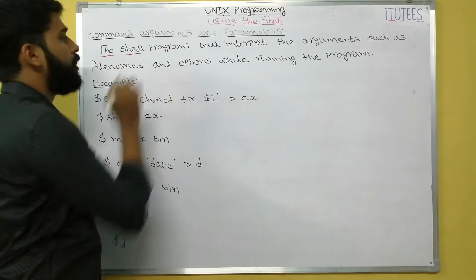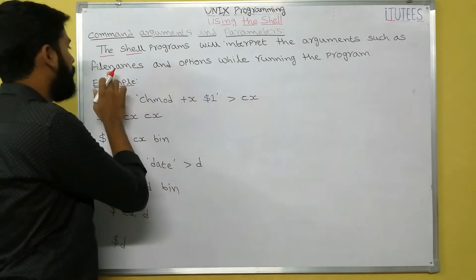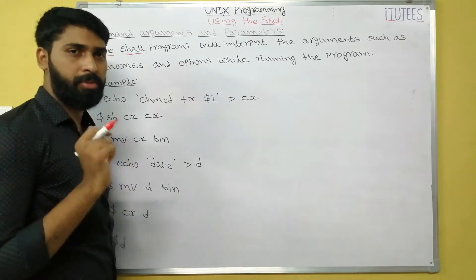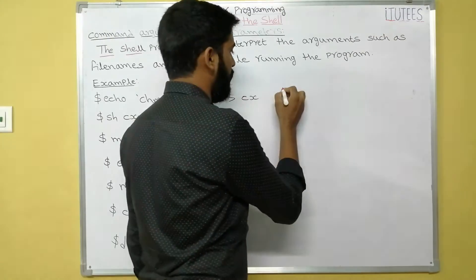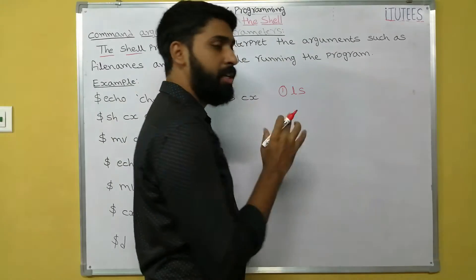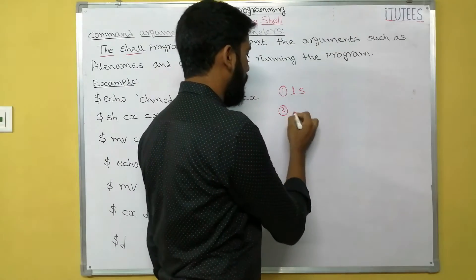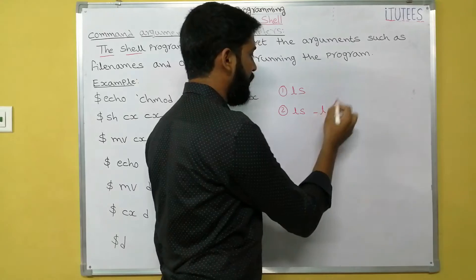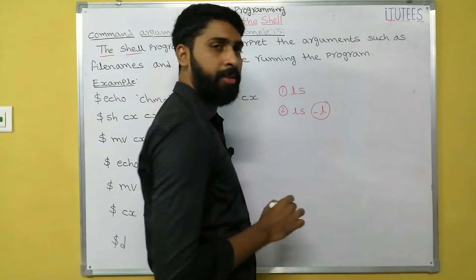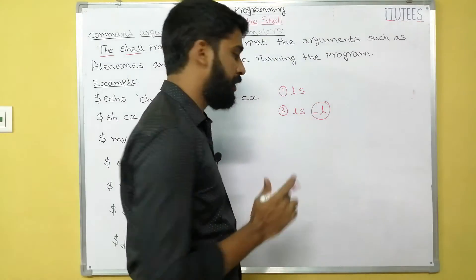The shell programs will interpret the arguments such as file names and options while running the programs. Now we can see one command: ls. What is ls? ls can list all the files in the current directory. ls -l — here we are providing one option, and based on that option the representation of data will be changed.